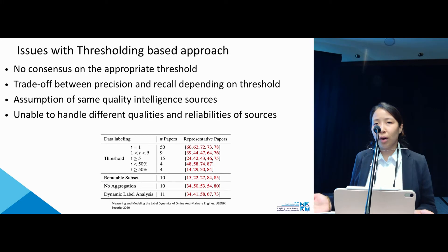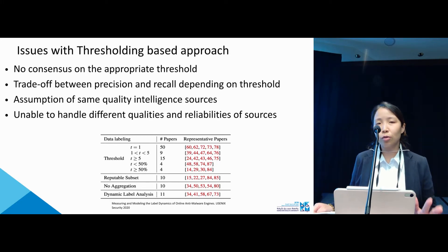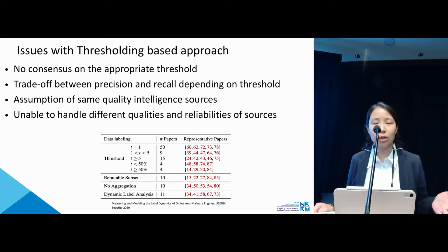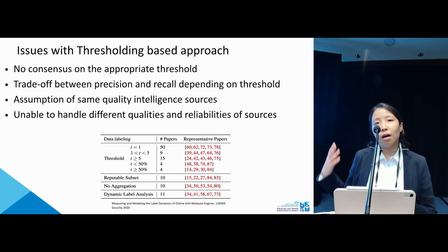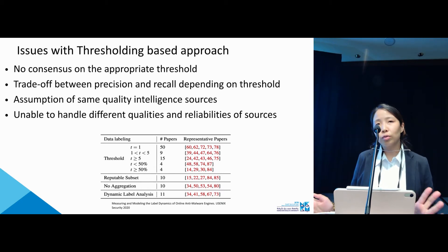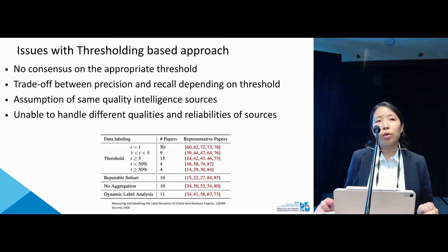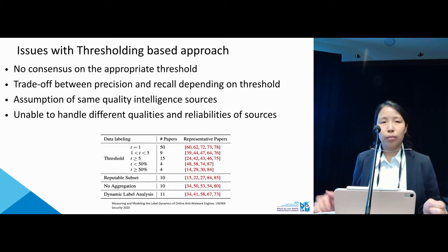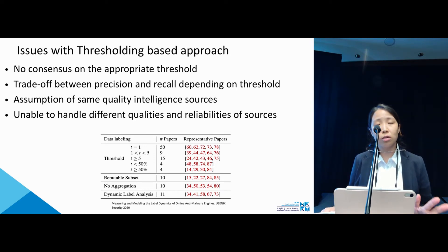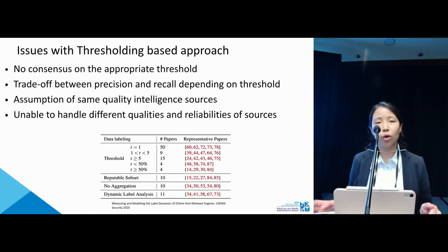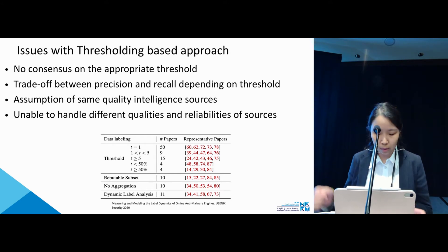There is a trade-off with thresholds: high thresholds may give high precision but low coverage, while low thresholds may give low precision but high coverage. Furthermore, these threshold-based approaches typically assume all intelligence sources are independent and cannot deal with different qualities and different reliabilities.